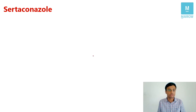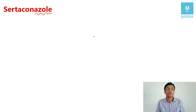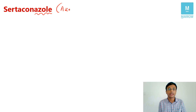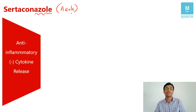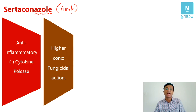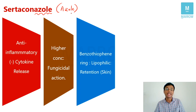What is special about sertaconazole? Whenever a drug ends with the word 'azole,' it belongs to the azole group of drugs, which are antifungal in nature. In addition to regular azole properties, sertaconazole has extra anti-inflammatory properties — it inhibits cytokine release. At higher concentrations, it can also be fungicidal. Importantly, sertaconazole is chemically made up of a benzothiophene ring, making it lipophilic and retained within the skin for a longer duration.